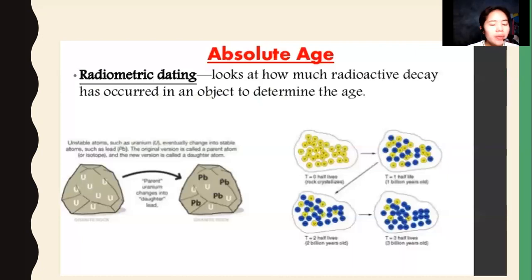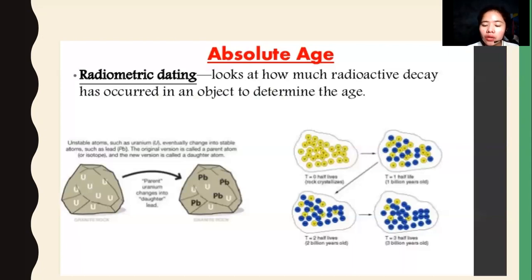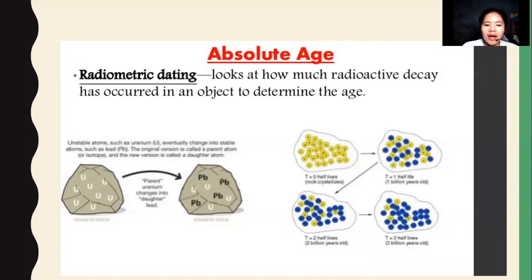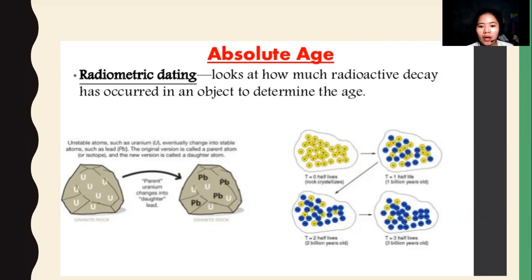Absolute dating is also called radiometric dating because it gives the exact time by looking at how much radioactive decay has occurred in an object. Unstable atoms such as uranium eventually change into stable atoms such as lead — lead is the daughter atom of uranium. The original version is called the parent isotope, and the new stable version is called the daughter atom. That is what happens during half-life.